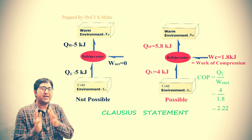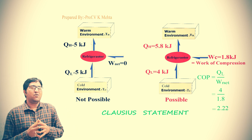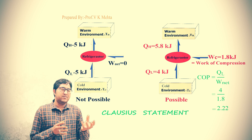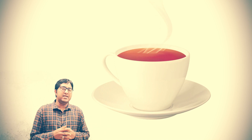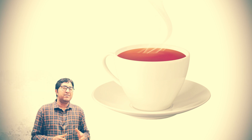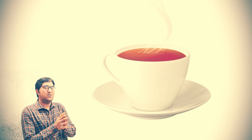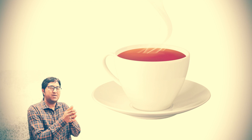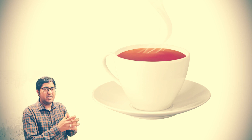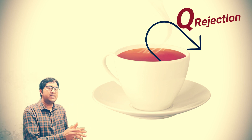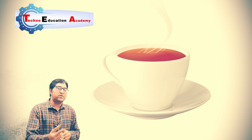We know that energy always flows from high grade to low grade. For example, in the early morning we take breakfast with a cup of tea. That cup of tea is at around 45 to 50 degrees Celsius. When it is exposed to the atmosphere, after some time the temperature of the hot tea becomes the same as the atmospheric temperature — the hot tea rejects heat to the surrounding.